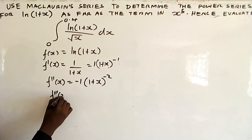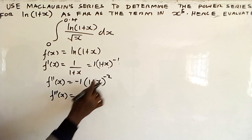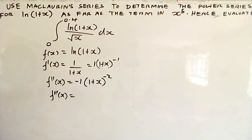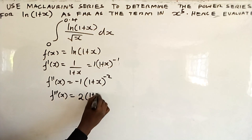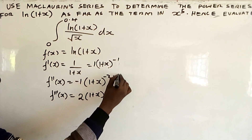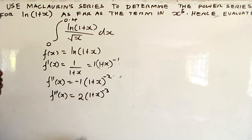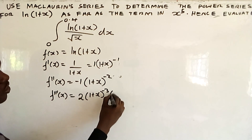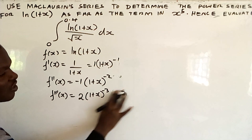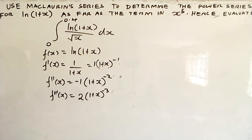Differentiating for the third time: it is negative 2 times negative 1, which gives 2. Then (1+x) with the power reduced by 1 becomes negative 3. The inner function (1+x) differentiates to just 1, so it stays the same.